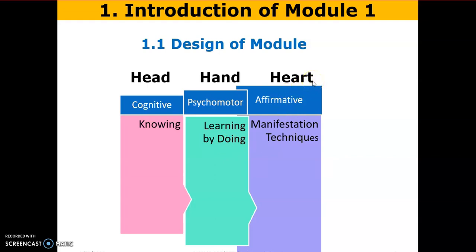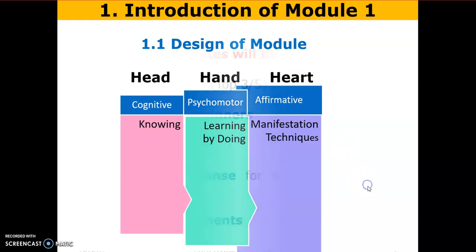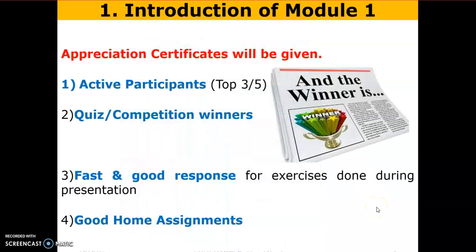Third, you will also involve your heart — that is the affective domain. Why is the heart required? Because when the brain cannot do, the heart will do. The power of the heart is 10,000 times that of the brain. So throughout this course, we are using both brain and heart for getting success. Every five minutes of our session, we will do some meditations to involve the heart throughout the course. That is the design of the course.